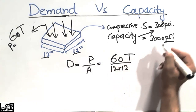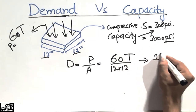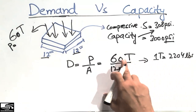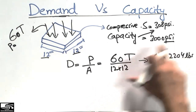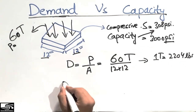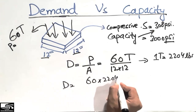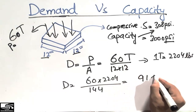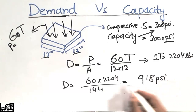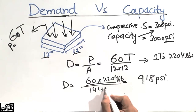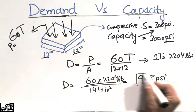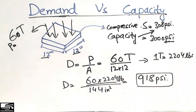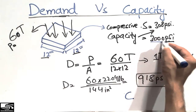To convert 60 tons into pounds, we use the conversion that 1 ton equals 2204 pounds. So, demand equals 60 multiplied by 2204, divided by 144 (which is 12 × 12 square inches). This gives us 918 psi — 918 pounds per square inch. This is the demand on the concrete block.